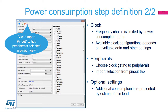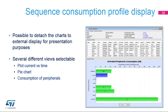Disabling the clock for an unused peripheral is a sure way to conserve energy. Check peripherals that will be powered during the step duration. By clicking the Import button, all the peripherals that will be initialized by the generated code will be selected. Finally, define the step duration and any additional consumption settings. Additional consumption may be represented by various loads attached to pins, such as LEDs, buttons, or communication interfaces.